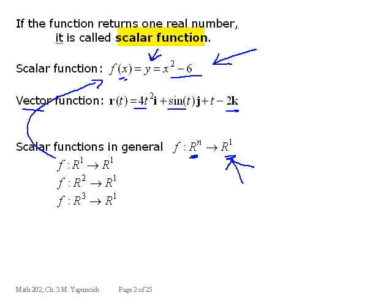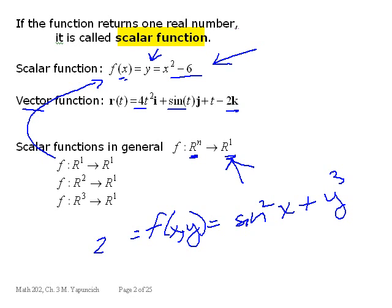A function mapping R2 into R1 might be f of xy equals, I just say, sin squared x plus y cubed. The result of this is one real number, which you could call z. You could even have a function of three variables if it returns one real number. It is still called a scalar function. So you're looking at the range.